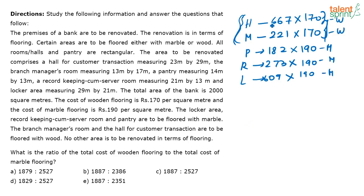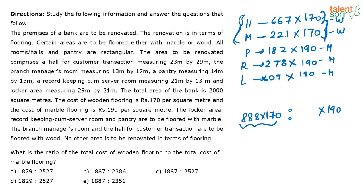For the wood flooring, take 667 plus 221, which gives 888, so the wood cost is 888 into 170. For the marble flooring, take 182 plus 273 plus 609. Taking 190 as common, just add these three values — you get 1064.